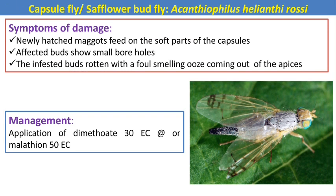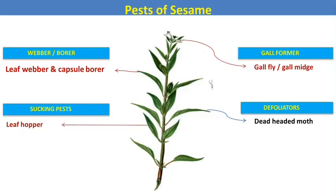The next minor pest is the capsule fly or safflower fly. It is a Dipteran pest, hence the damaging stage is maggots. Newly hatched maggots feed on the soft parts of the capsules; in case of severe infestation the affected buds show small boreholes. Infested buds rot and an offensive smell or bad odor is produced. For management of this fly, we can spray the crop with dimethoate or malathion.